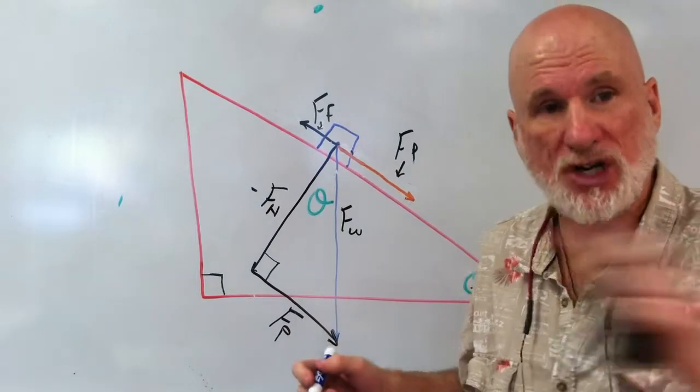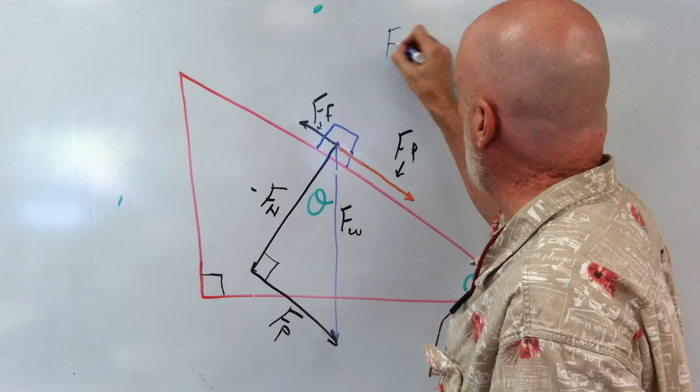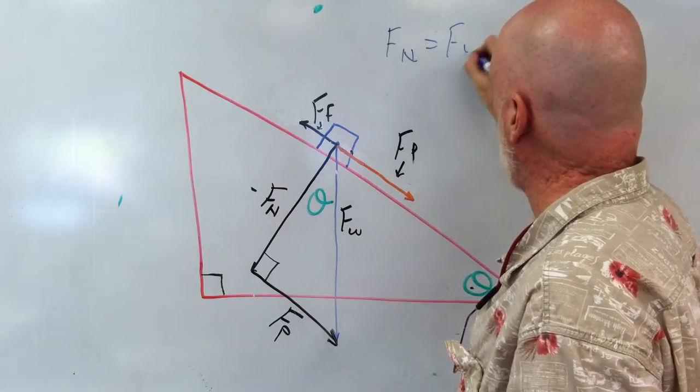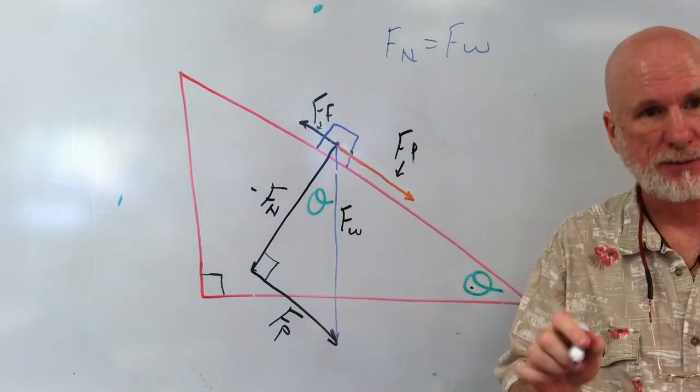Now, as you remember, horizontally, Fn equals Fw. That's horizontal. Horizontal.